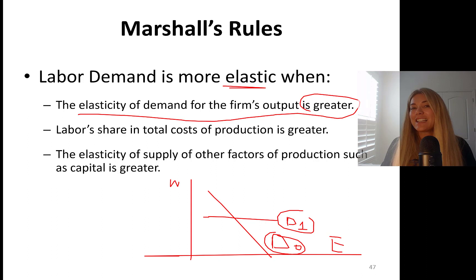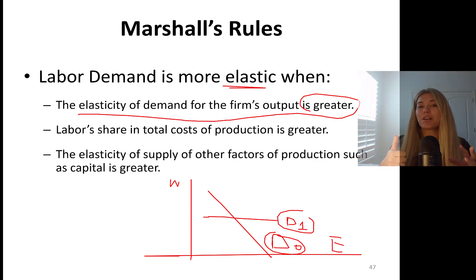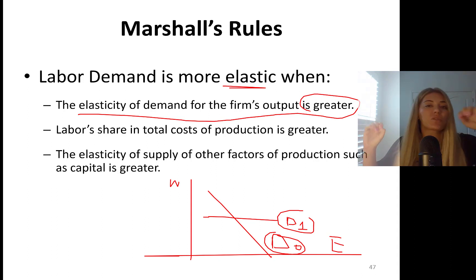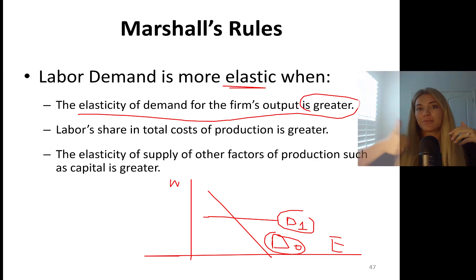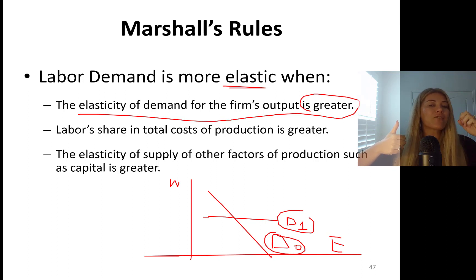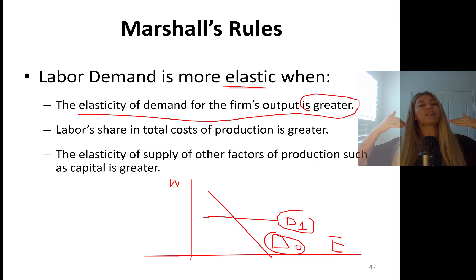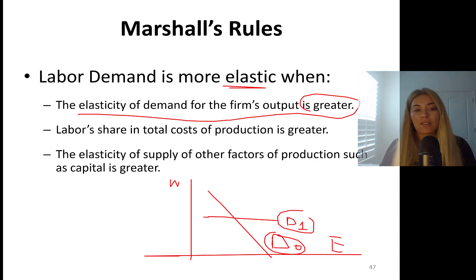If the elasticity of demand for the firm's output is greater — meaning more of the stuff I'm selling has elastic demand — if I increase the price of the product I'm selling, people are going to cut back a lot. For instance, if I increase the price of a BMW by 20%, the demand for it is going to decline by more than 20%, and that's going to affect my labor demand. So I'm going to cut my labor demand way down. That's rule one.